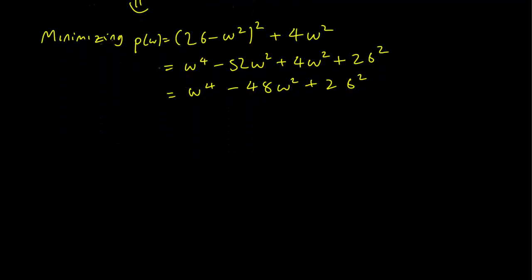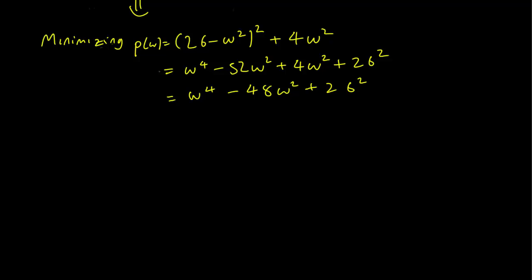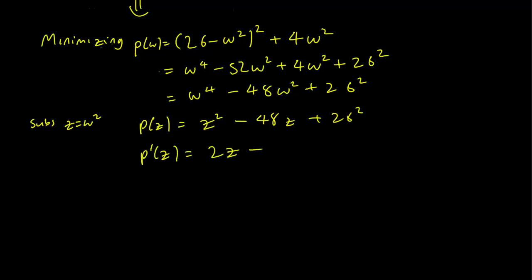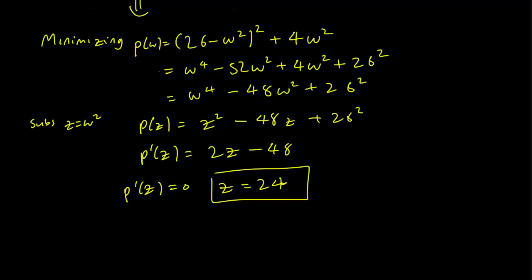It's easier if we don't have to worry about the squares, so let's substitute Z equals omega squared. We need to minimize P(Z) = Z squared minus 48Z plus 26 squared. Taking the derivative gives 2Z minus 48, which equals 0 when Z equals 24. We can verify this is a minimum since P double prime equals 2, which is positive. So Z equals 24, meaning omega squared equals 24, and omega equals the square root of 24. This is our practical resonance frequency.